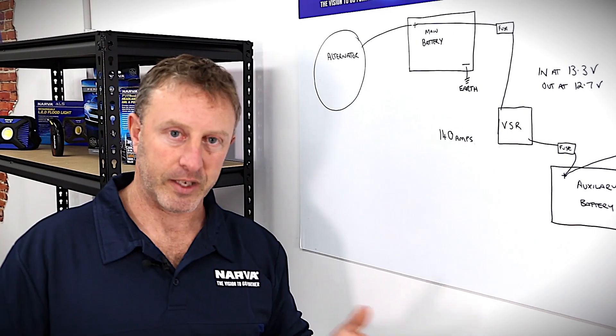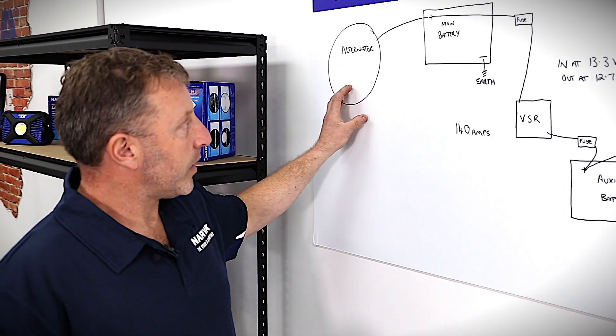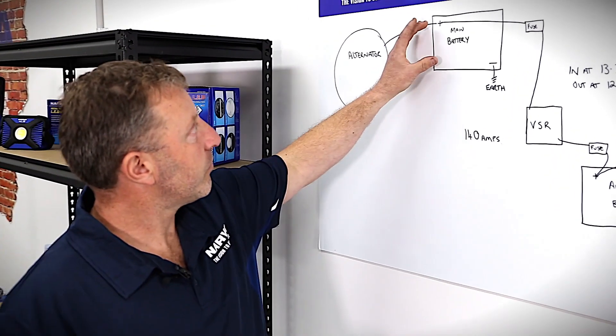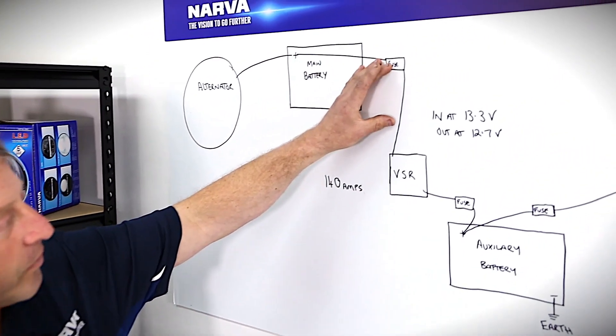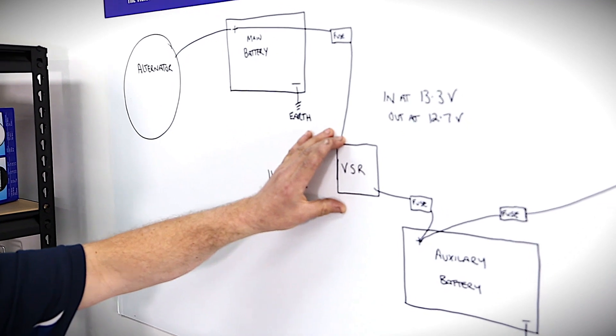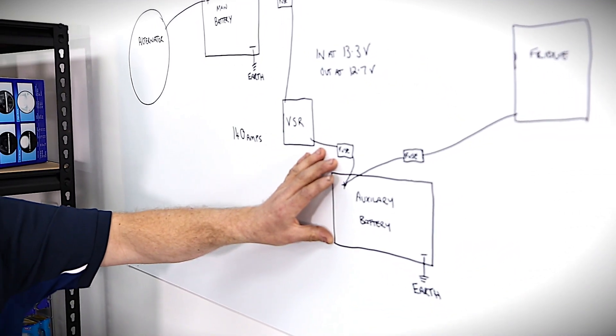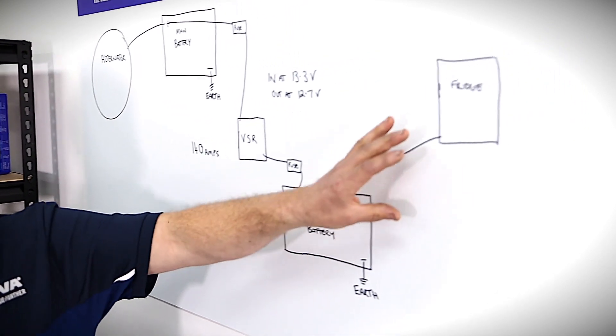The voltage sensing relay in a dual battery setup is connected from the main battery through a fuse to the voltage sensing relay. From there we fuse the other end to the auxiliary battery as well, and then the auxiliary battery will run the fridge.